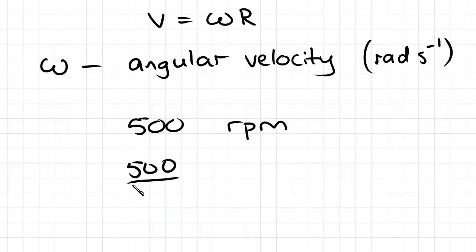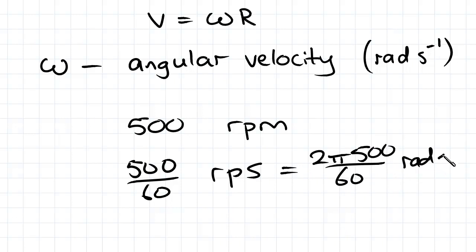So 500 divided by 60 radians per second, which is further converted by multiplying by 2 pi. So there are 2 pi radians in a revolution, so that will equal 2 pi times 500 on 60 radians per second.